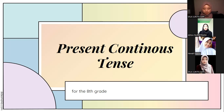Assalamu'alaikum warahmatullahi wabarakatuh. My name is Adilana Fitriani. I'm from class 6B. My student number is 3190101 and I'm going to do peer teaching on the material Present Continuous Tense for 8th grade or junior high school. Alright, so let's start.